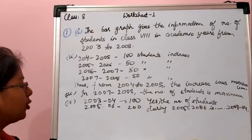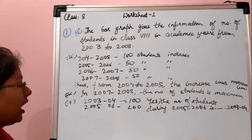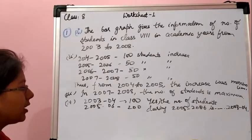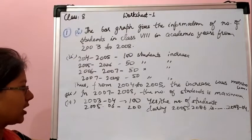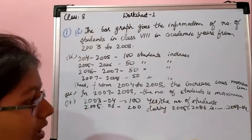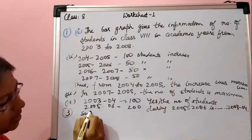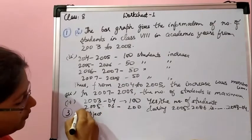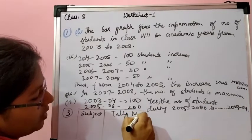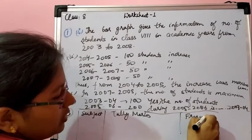In the third question, a group of students was asked for their favorite subject and a list is given. To answer which is the most liked and which is the least liked subject, we have to make a frequency distribution table. In this table we will write: subject, tally marks, and frequency — these three things.